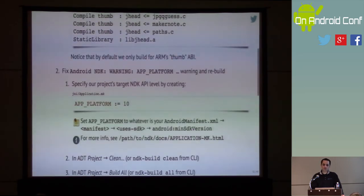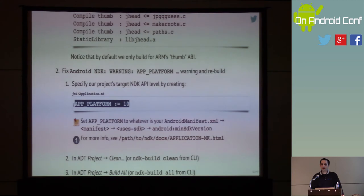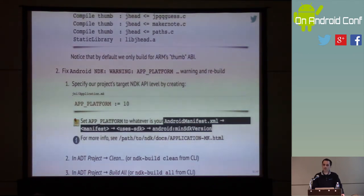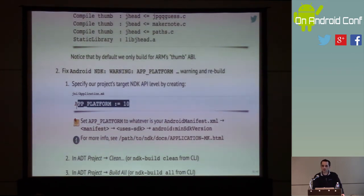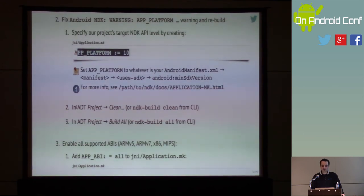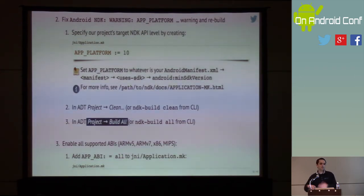A way to fix the build warning is to create another file in the JNI directory called Application.mk. In this file, we specify APP_PLATFORM equals the platform we specified as our minimum SDK version. Whatever your manifest file says about your minimum platform version should be here. This is totally redundant and unnecessary in my mind, but it's a way to get rid of the warning.